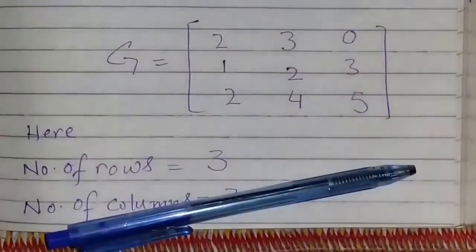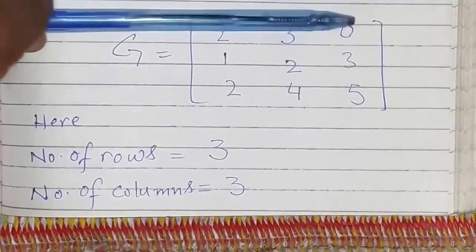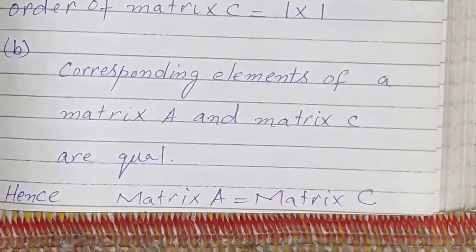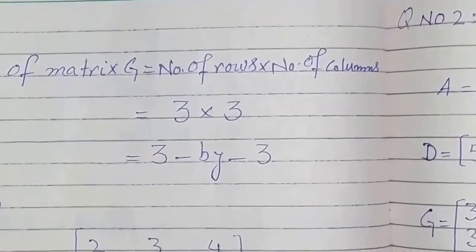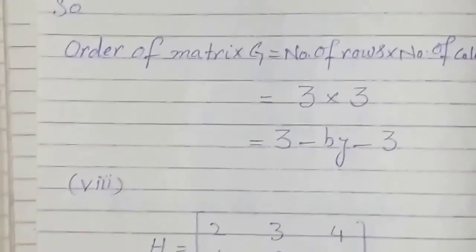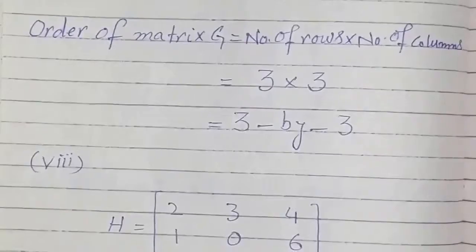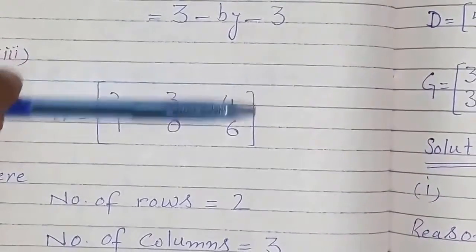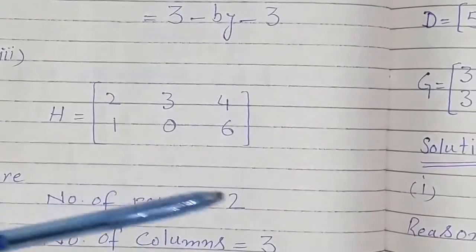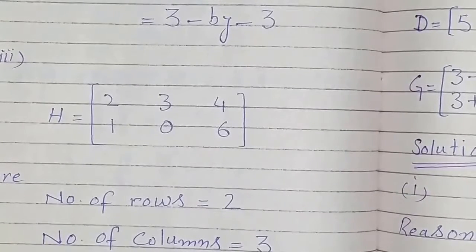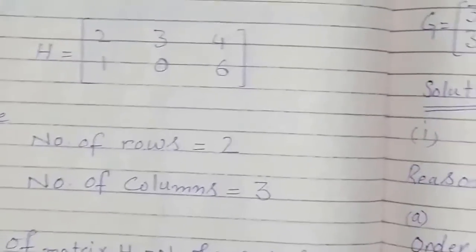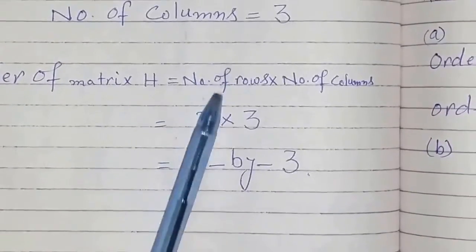Now we have matrix G. It has 3 rows and 3 columns, so its order is 3 by 3. And matrix H has 2 rows and 3 columns — the number of rows is 2 and the number of columns is 3. Its order is 2 by 3, or 2 times 3.